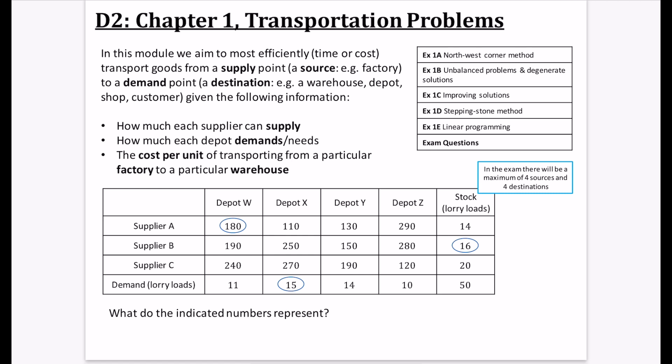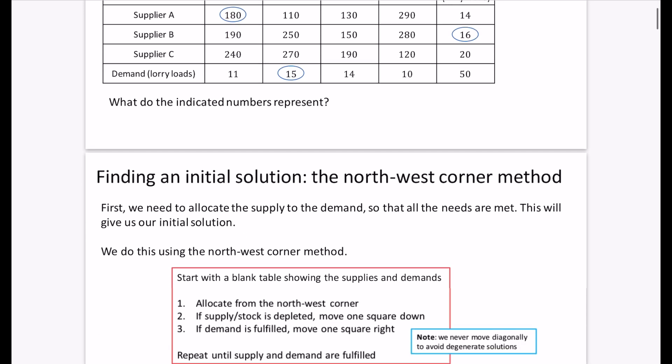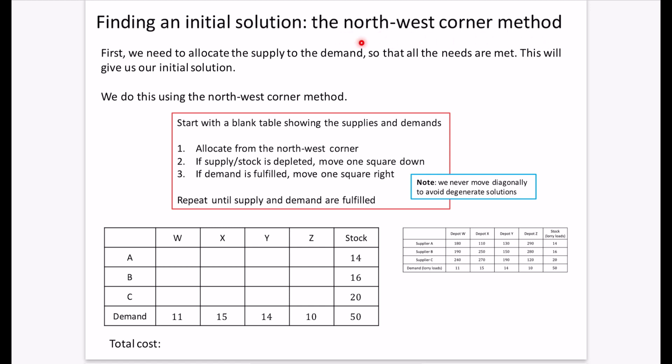We're going to start off by doing an allocation, and then try to improve that solution to make it better and better. The first thing we'll learn about is the Northwest Corner Method — a way of assigning where all the lorries come from and where they go. We'll also look at unbalanced problems and degenerate solutions, then improve solutions using the stepping stone method in exercise 1D, with a bit added on about linear programming. In the exam, there will be a maximum of four sources and four destinations, so you should expect at most a four-by-four table.